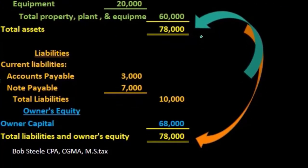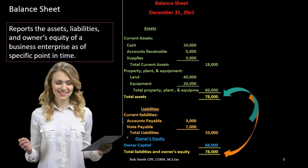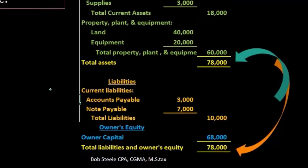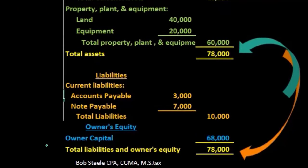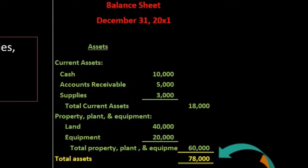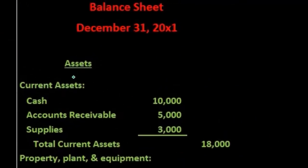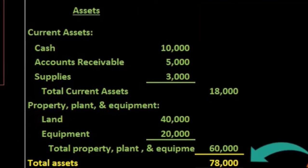One key component of the balance sheet is that it is presented as of a point in time. Therefore, we only have one date on the balance sheet — not a range, not a beginning and an end. It's useful to look at the most common balance sheet account, cash, to understand this concept, which seems simple but is not as simple as it may seem.